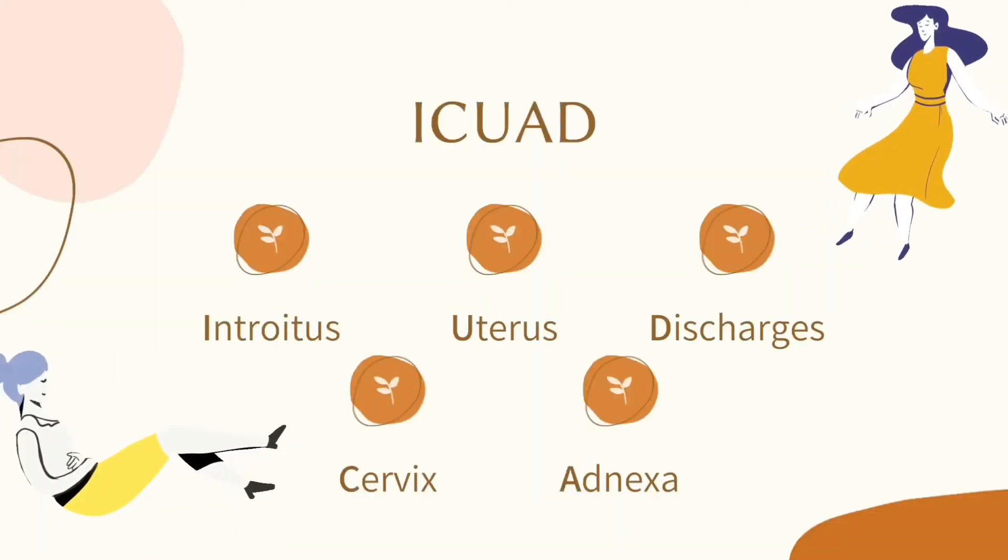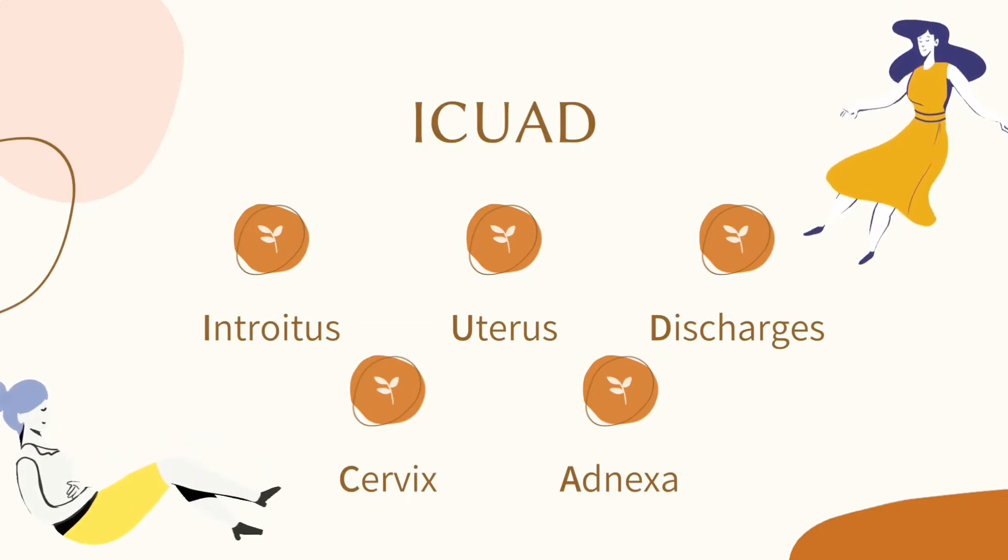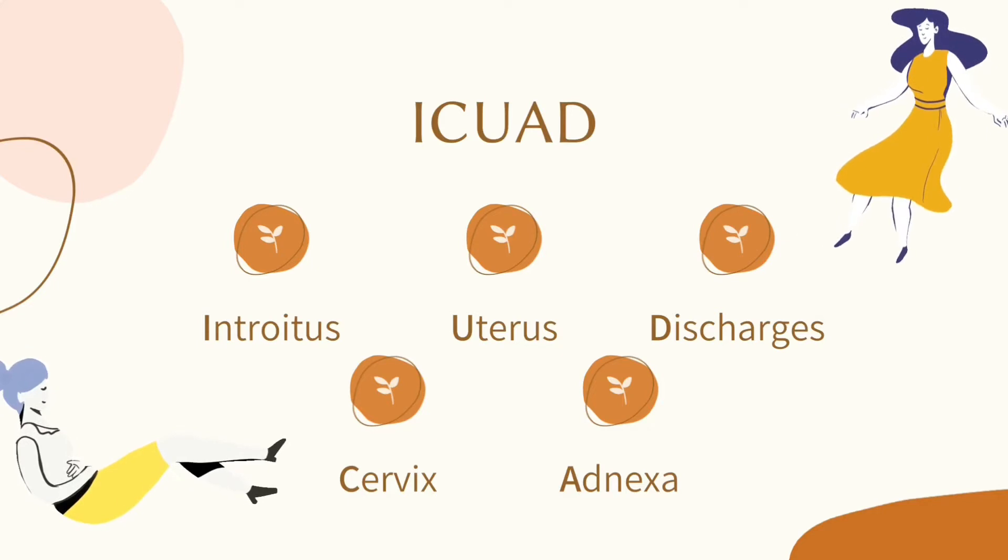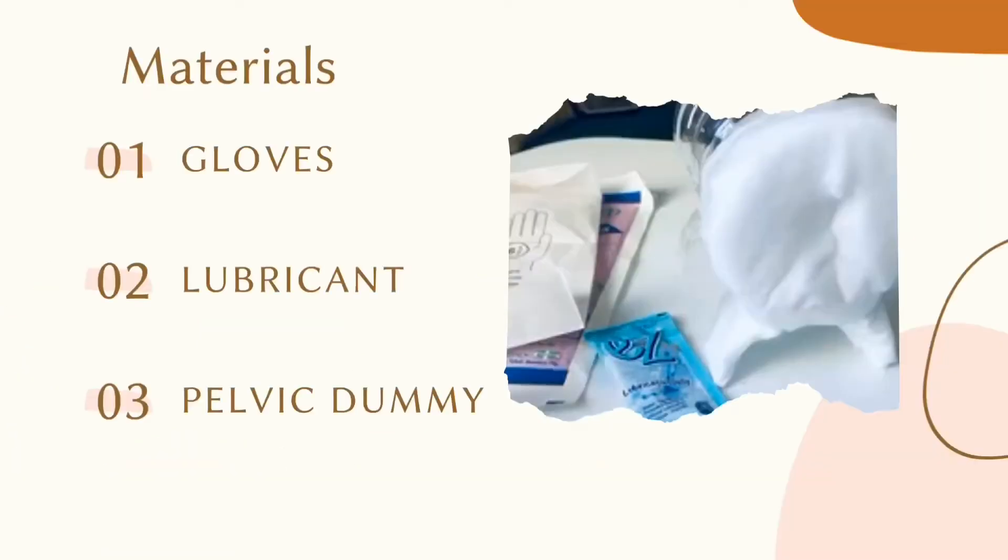A BPE guide for medical students has the mnemonics I-Quad or E-Quad that checks for the introitus, cervix, uterus, adnexa, and discharges. For the materials, we will need the gloves, the lubricant, and the pelvic dummy.